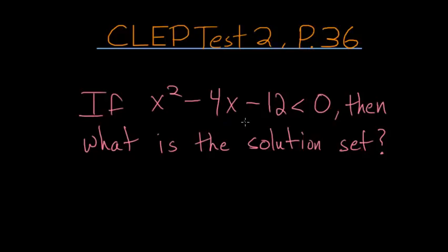If x squared minus 4x minus 12 is less than 0, then what is the solution set?